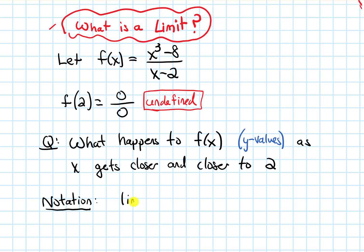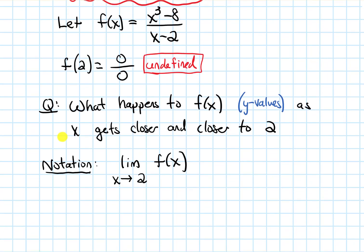I want to introduce some notation that we'll use to talk about this idea of letting x get closer and closer to a number. I write it as lim, which stands for limit. Underneath the lim, I write x, put an arrow, and then the number that x is getting close to, which is 2 here. And then next to the lim, I write my function. The way I say this in words is the limit of our function f(x) as x approaches 2.